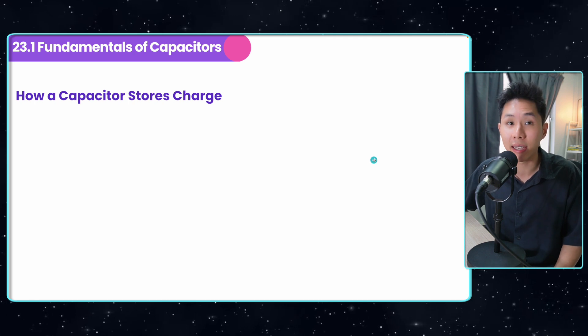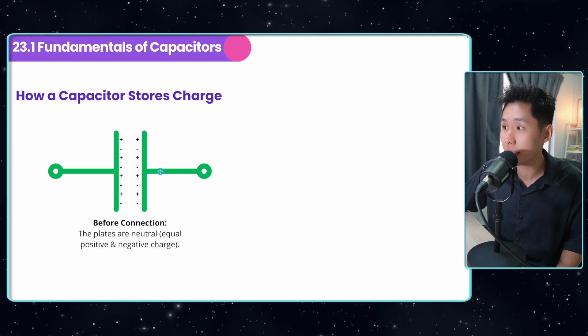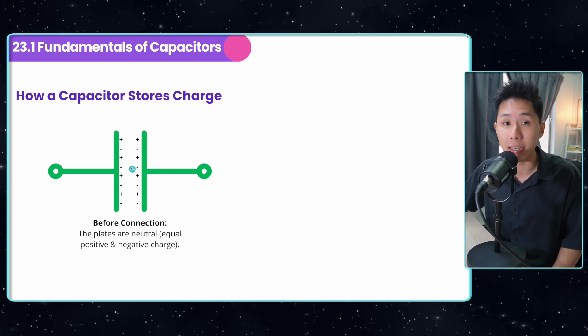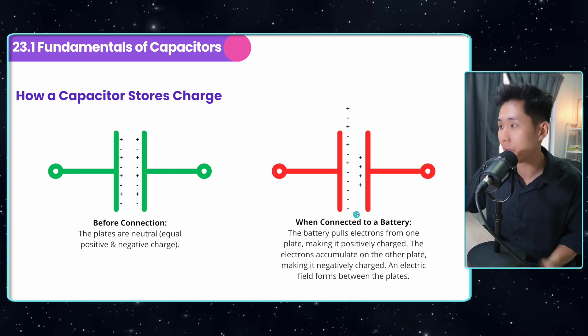So how can a capacitor store charges? First, this is the capacitor before connection. The plates are neutral, and you're going to have an equal number of positive and negative charge. And when connected to a battery,